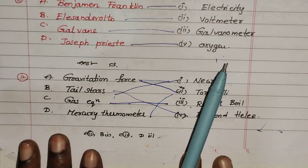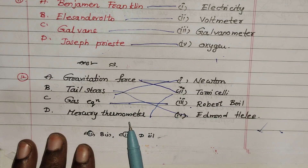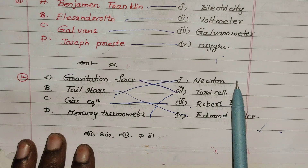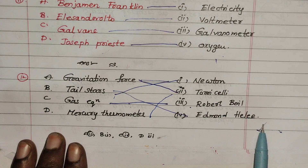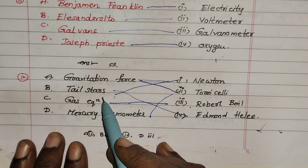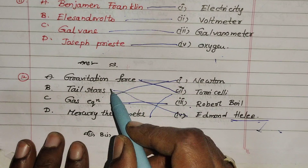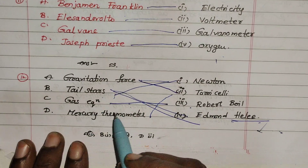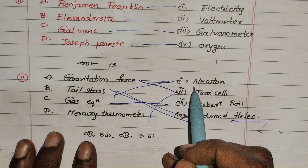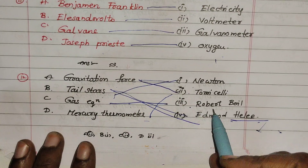12th question: Gravitational Force, Tail Star, Gas Equation, Mercury Thermometer Concept. Scientist names: Newton — Gravitational Force; Halley — Halley's Comet (Tail Star); Robert Boyle — Gas Equation; Fahrenheit — Mercury Thermometer.